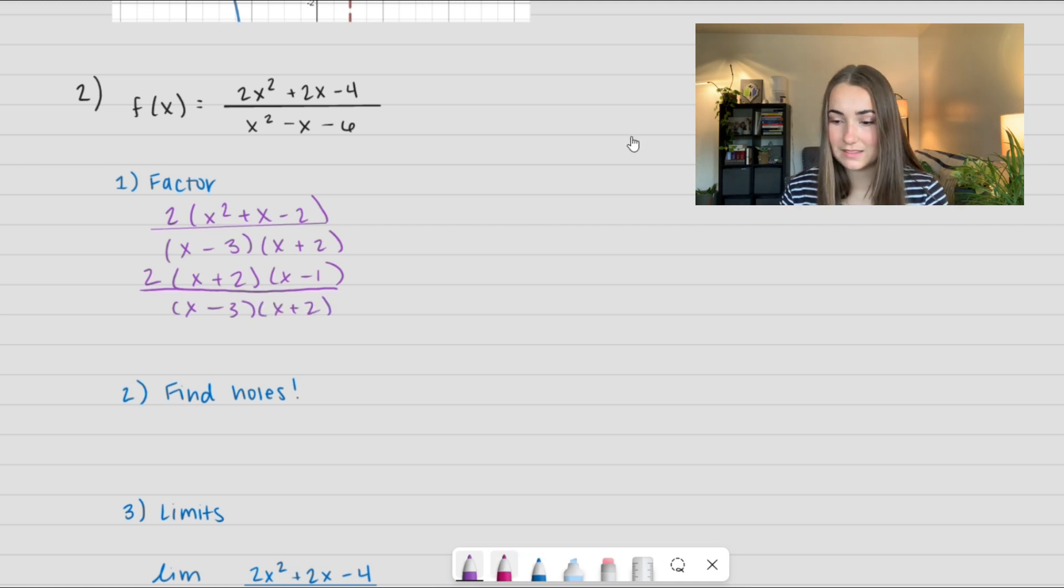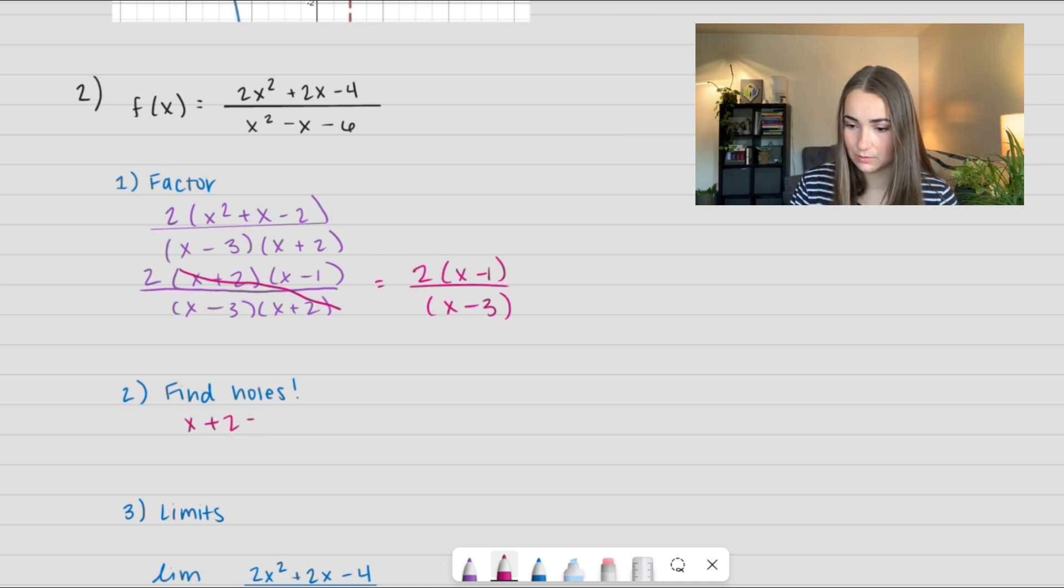This is where we have to pay attention to what divides out. So our (x+2) term divides out and I'm left with 2(x-1)/(x-3). So this tells me where my hole is. I take that term that divides out and set it equal to 0. So I get x = -2.